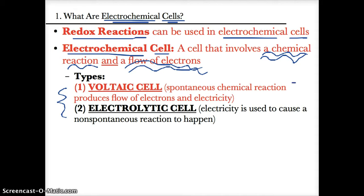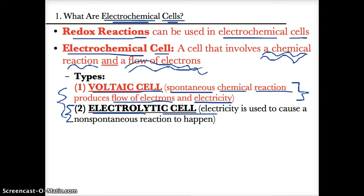In this lesson, we'll be focusing on the first type, which is voltaic cells or galvanic cells. Voltaic or galvanic cells are cells where a spontaneous chemical reaction happens by itself, and that reaction makes a flow of electrons, therefore producing electricity. The second type, which we'll learn about in a future lesson, are electrolytic cells — cells in which electricity is used to cause a non-spontaneous chemical reaction.